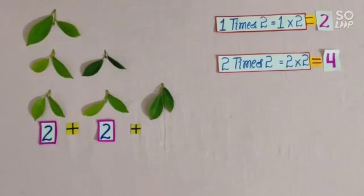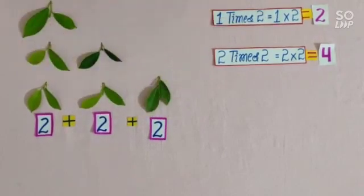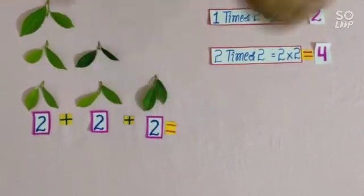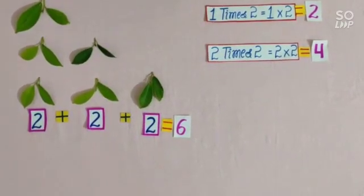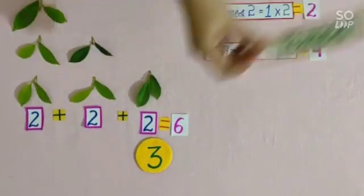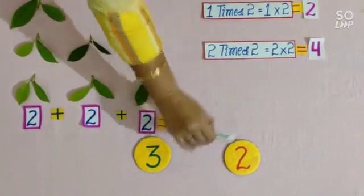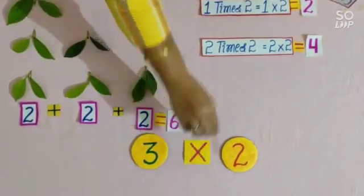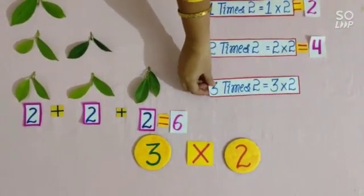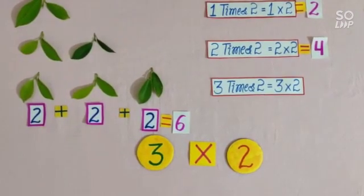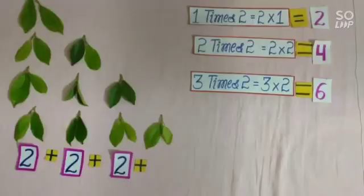Students, earlier we had 4 leaves. By adding 2 more leaves, the number of leaves are 6, and the groups of 2 leaves are 3. So we will write here: 3 times 2. In place of times, we will put the sign of multiply. So students, we will write here: 3 times 2 is equal to 3 multiplied by 2 is equal to 6.